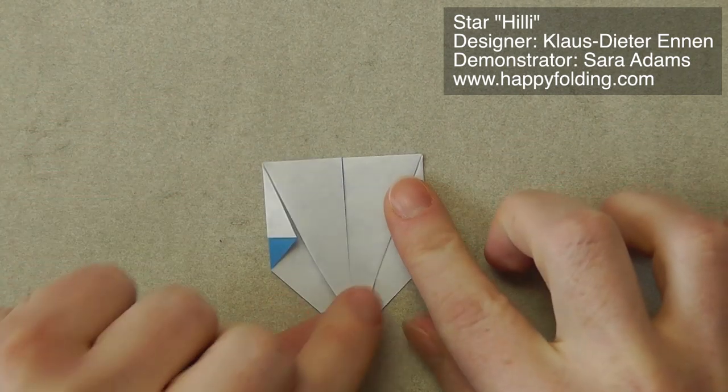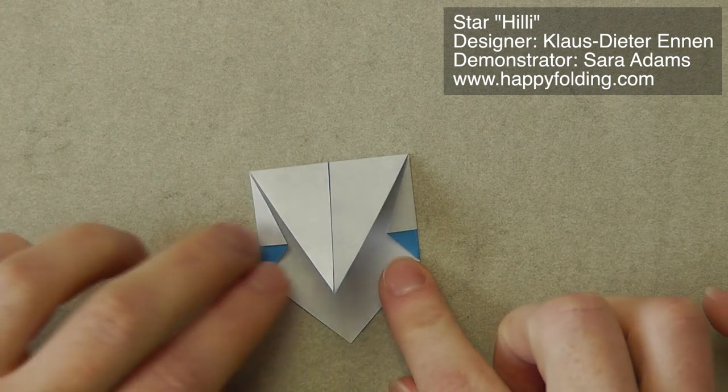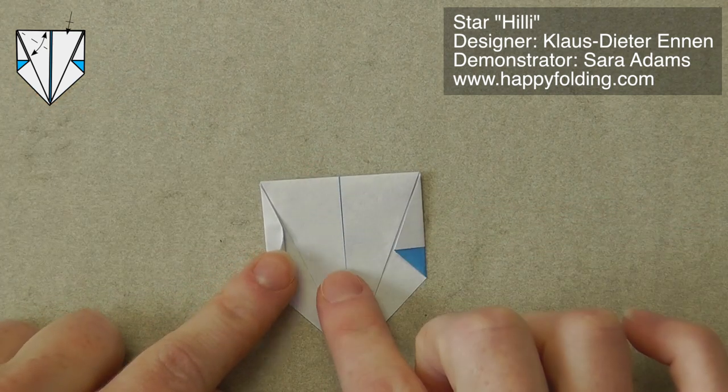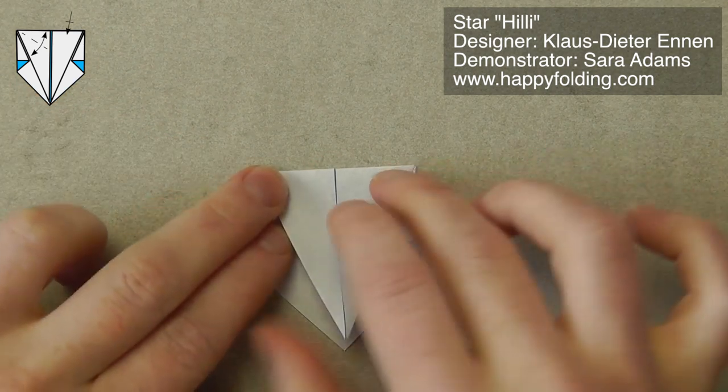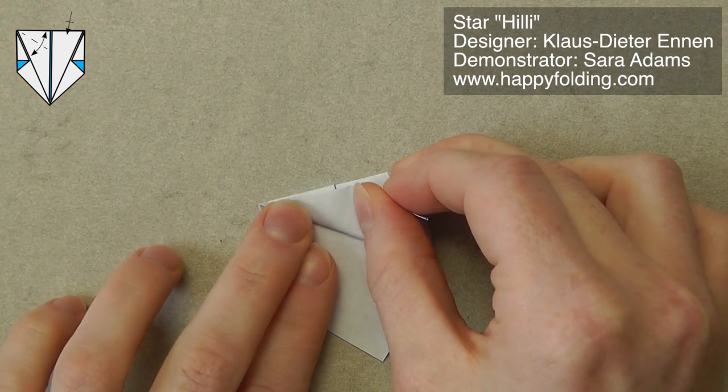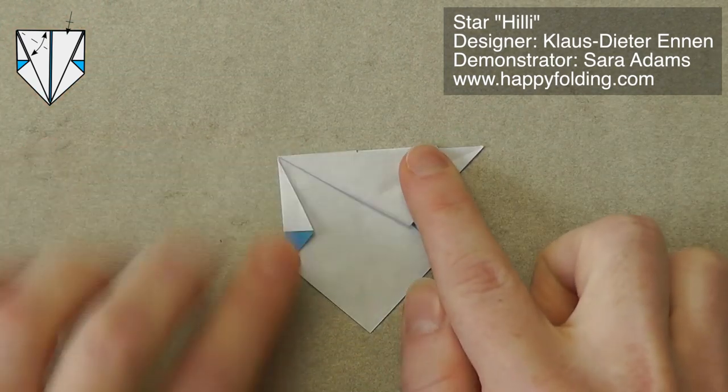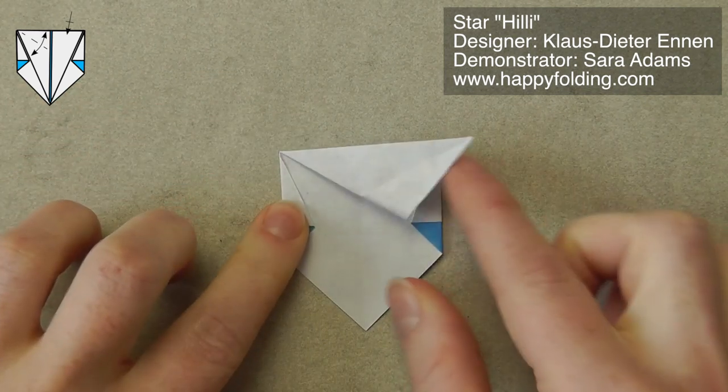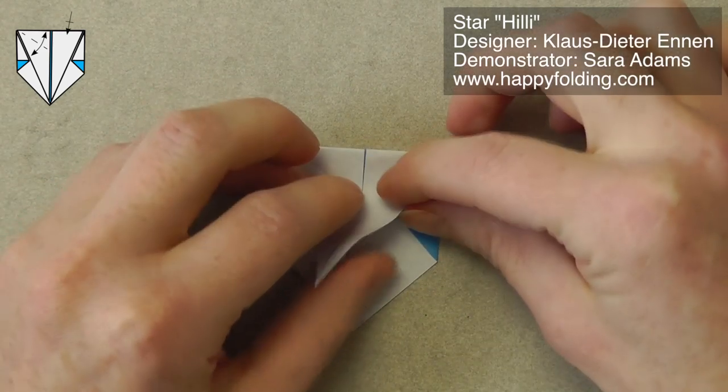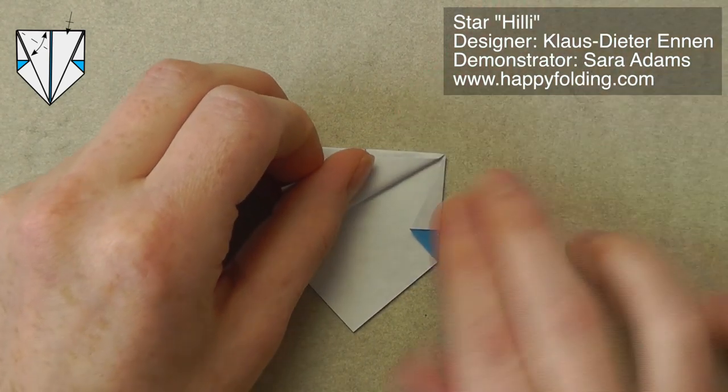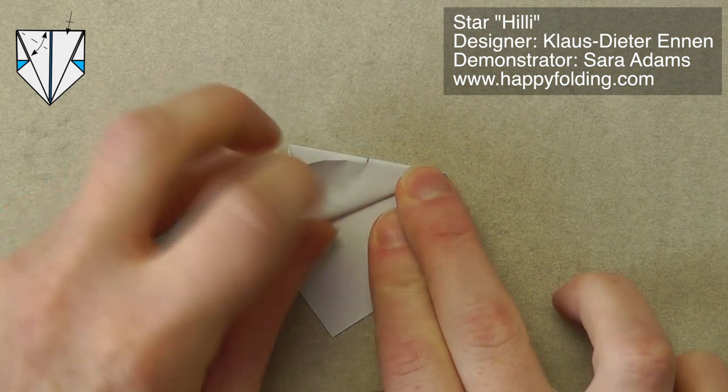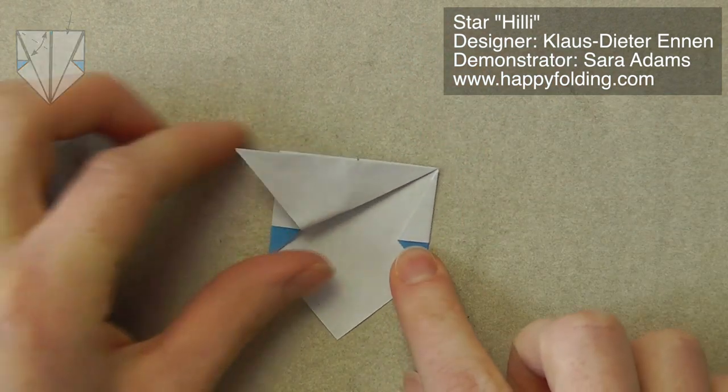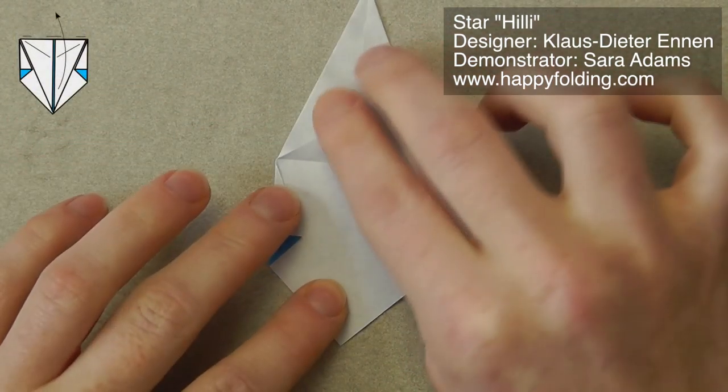Now, we are going to take this tip and lift it. We're going to bring this edge over to that edge and crease just up to that center line. I'm going to take it and then add a crease just up to the center line, and again, crease. Now, we're going to unfold this.